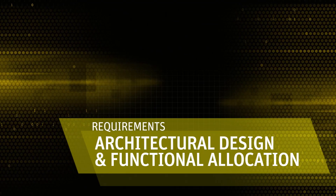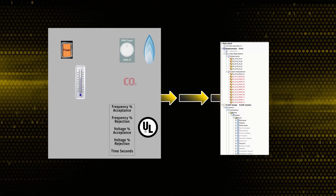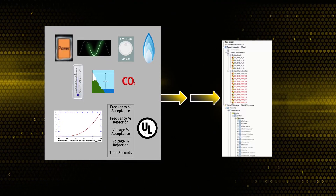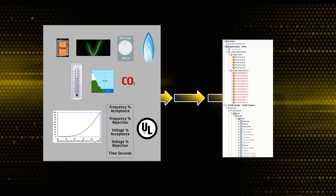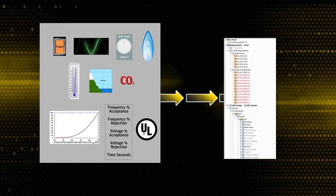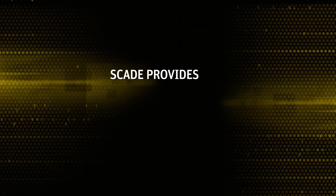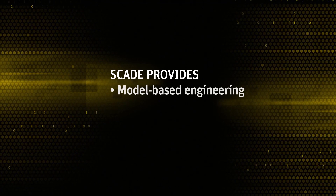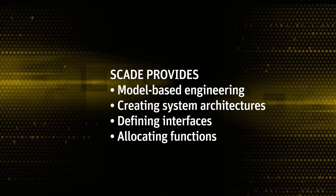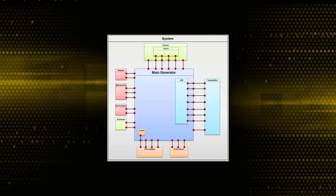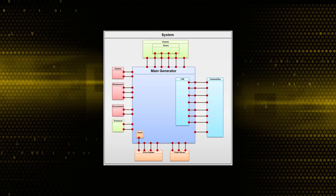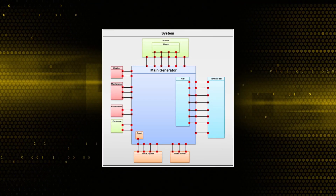Now let's review some specific requirements for designing and simulating a genset. All of these requirements — from power, engine speed, and temperature through seismic, wind, and snow load — can be imported and maintained in ANSYS SCADE System. In addition to maintaining requirements, SCADE provides a model-based engineering environment for creating system architectures, defining interfaces, and allocating functions. Shown here is a typical genset boundary diagram created in ANSYS SCADE, accurately representing the interactions between various components.